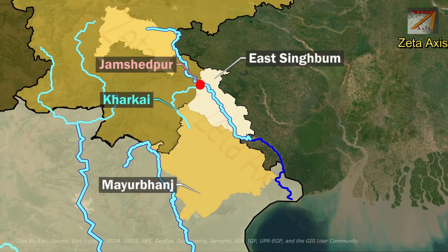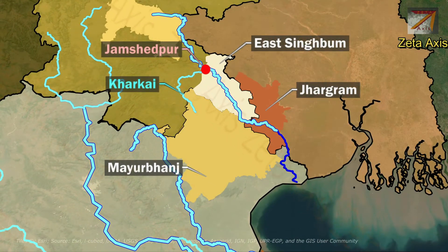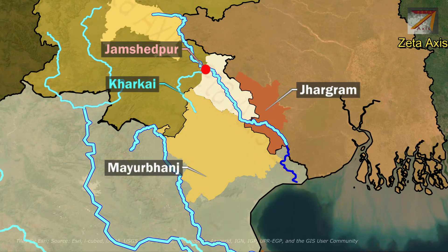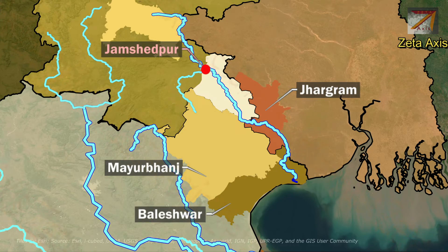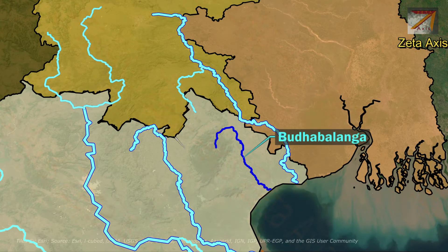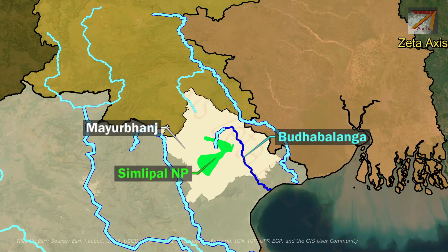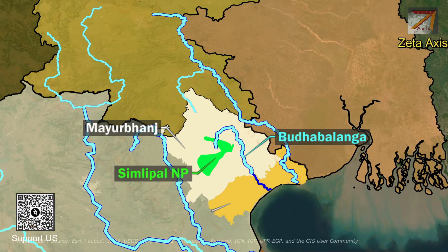From East Singhbhum district, the Subarnarekha river enters Odisha in Mayurbhanj district, then flows into Jhargram district of West Bengal, and again flows back into Odisha in Baleshwar district. The Budhabalang river originates in Mayurbhanj district in Simlipal National Park and Simlipal Tiger Reserve, and then flows into Baleshwar district of Odisha where it meets the Bay of Bengal.